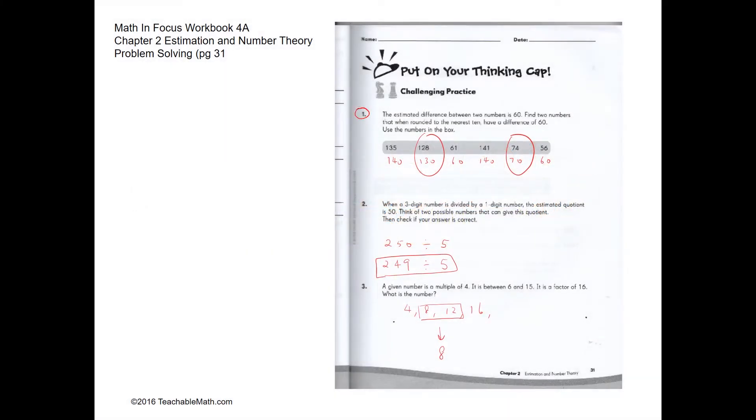Question 1. The estimated difference between two numbers is 60. Find the two numbers that when rounded to the nearest 10 have a difference of 60.